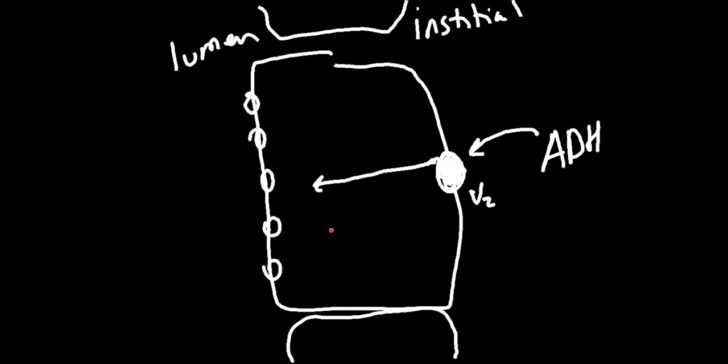It's going to stick aquaporins onto the luminal side of the membrane. The aquaporins are a pore for water. So we have all this water coming down. Here's our glomerulus filters, proximal convoluted tubule, descending loop, ascending, distal convoluted, and now we're in the collecting duct. That collecting duct will eventually lead to a ureter, then the bladder, and then excretion.